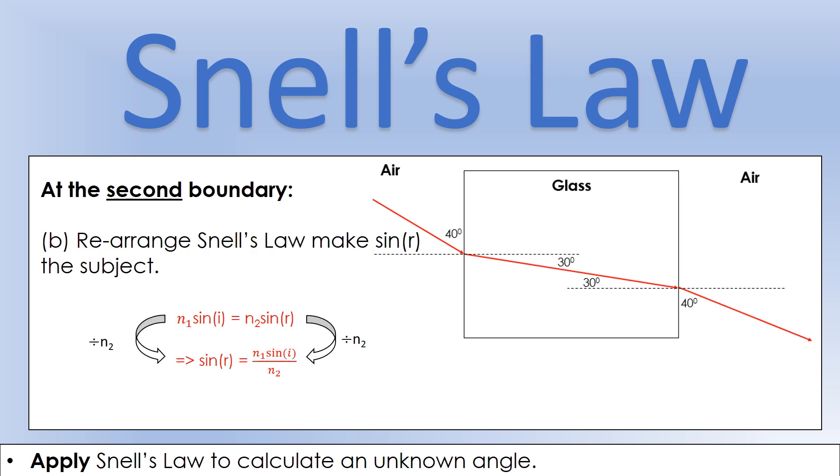If we want to calculate what the angle of refraction is, the first thing we're going to do is make sine r the subject of the equation, and the way we do that is dividing both sides by n2. Now we're going to calculate what sine r is and then show that that angle is indeed 40 degrees.